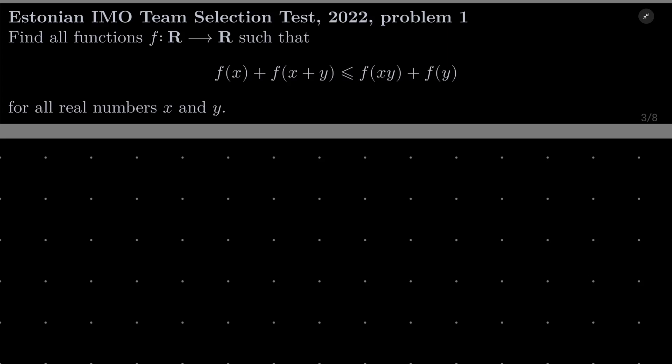We have a functional inequality. We wish to find all functions f from the set of real numbers into itself such that f(x) plus f(x+y) is less than or equal to f(xy) plus f(y) for all real numbers x and y.